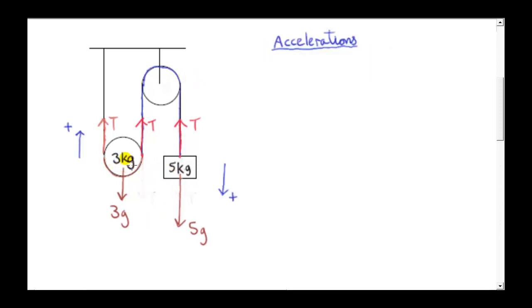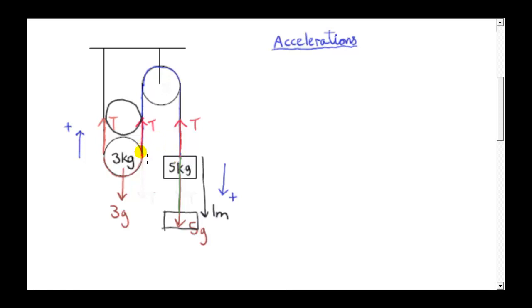Now let's consider the accelerations of these two particles. The five kilogram mass moves down while the three kilogram mass moves up, but their accelerations are not the same. To see why, consider what would happen if the five kilogram mass moves down by one meter. The string on this side of the system moves down one meter, so this distance plus this distance must add up to one meter. We've taken one meter of string from one side and put it in the other, meaning half a meter from each side of the system.